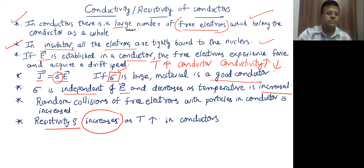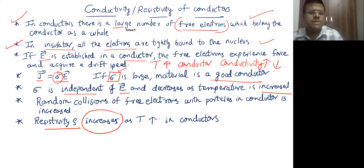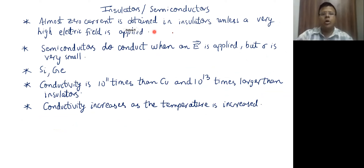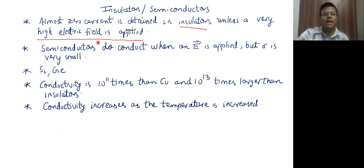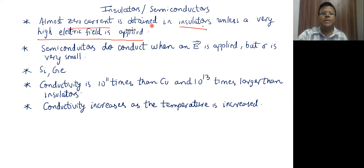In conductors, when you increase temperature, conductivity decreases and resistivity increases. Conductivity is also independent of the electric field — that is another important point to note. If you talk about insulators, we will be seeing in future why insulators don't have any free electrons at all. If you apply a lot of electric field, only then could some current flow by the process of dielectric breakdown. Otherwise there is going to be zero current in insulators.